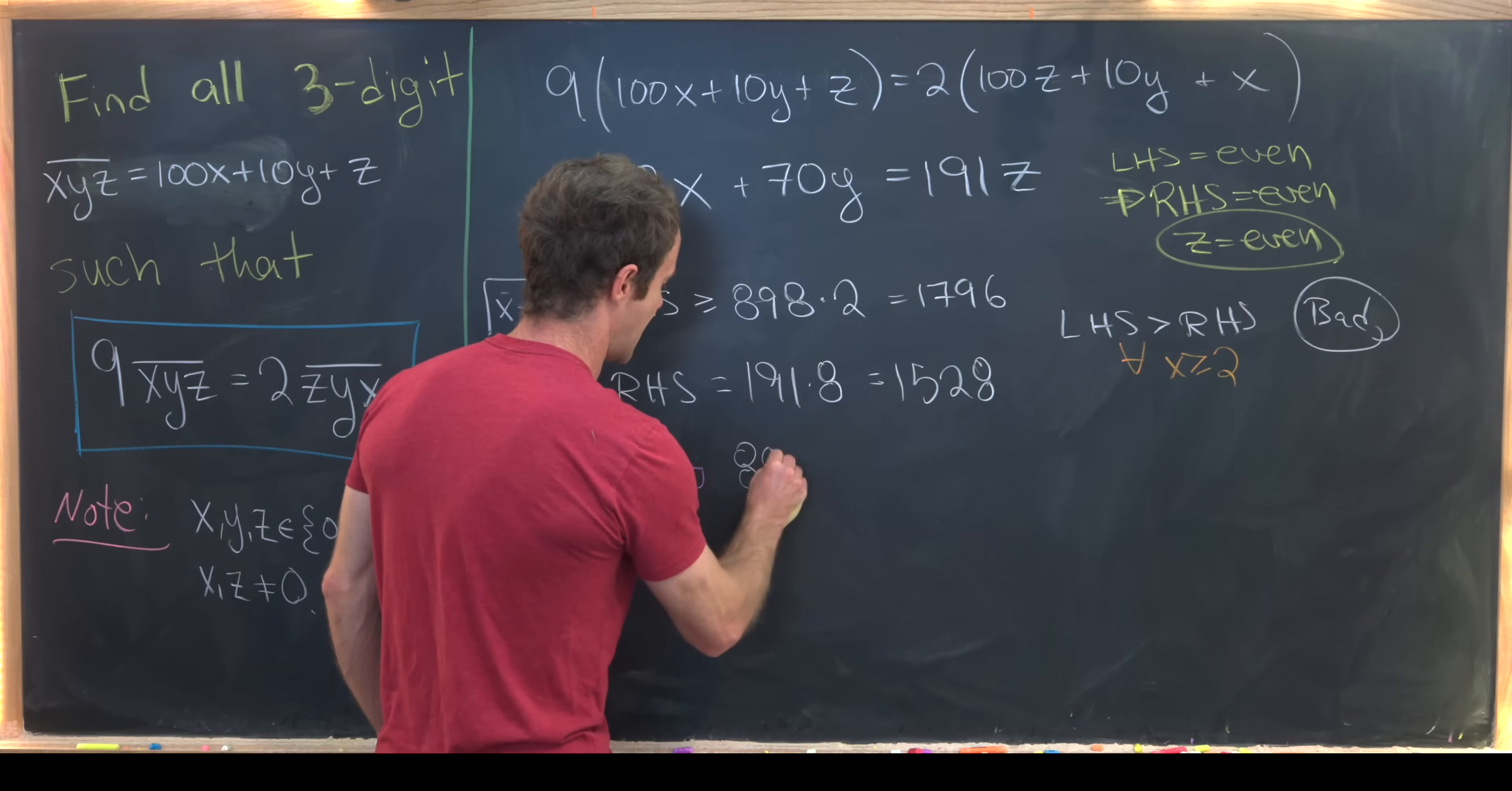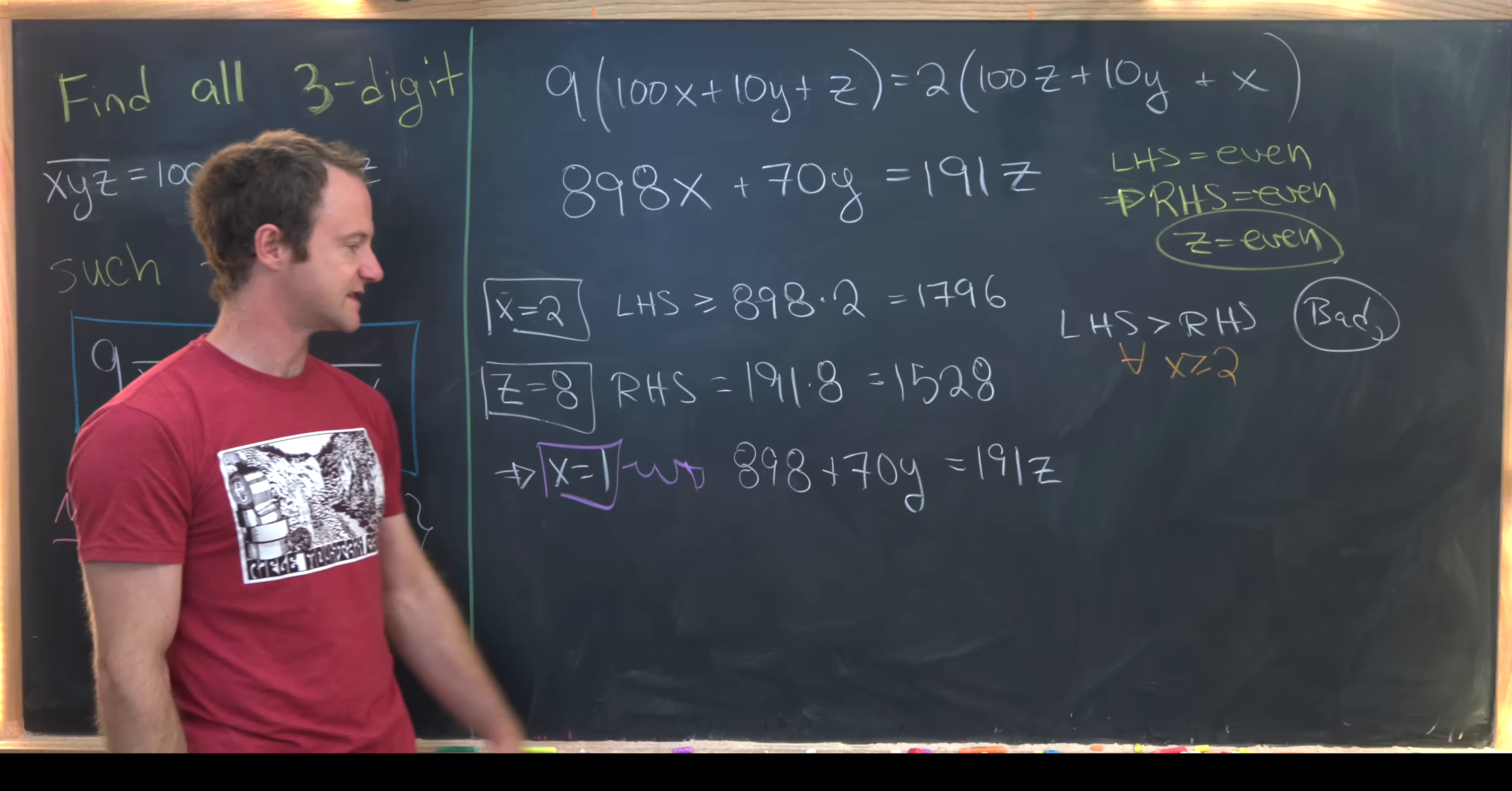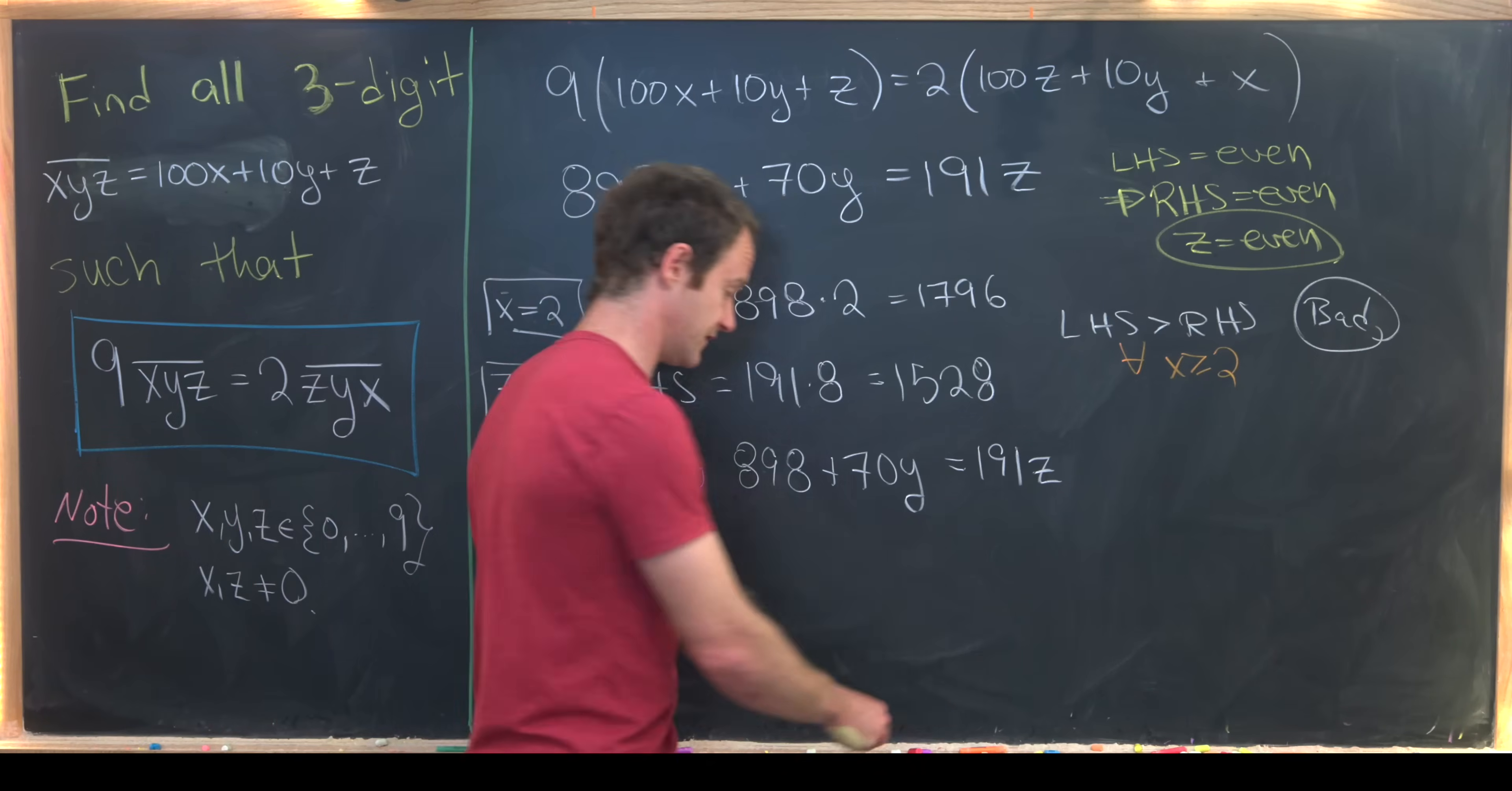So notice now we have 898 plus 70y is equal to 191z. Because again we know that x is equal to 1. And now we look at this and see that the left hand side is at least 898, which means the right hand side has to be that large as well, which tells us we have to pick certain values of z.